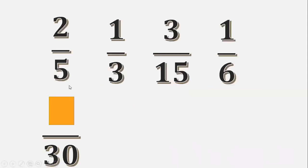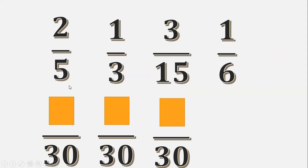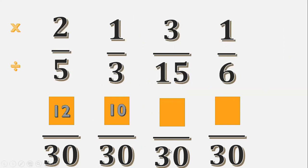Change the denominator into 30. Same process. 30 divide 5 equals 6. 6 times 2 equals 12. 30 divide 3 equals 10. 10 times 1 equals 10. 30 divide 15 equals 2. 2 times 3 equals 6. 30 divide 6 equals 5. 5 times 1 equals 5.